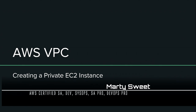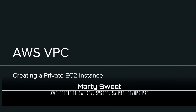Hi, in this tutorial we're going to set up an EC2 instance within a private VPC subnet and see how traffic routes via a NAT gateway using specific route tables. Let's get started.